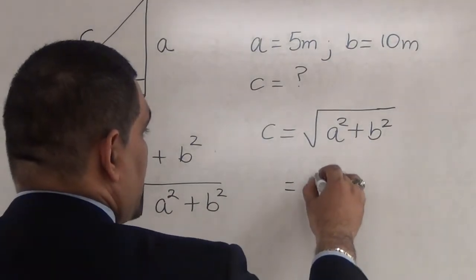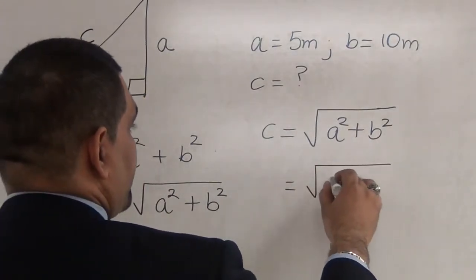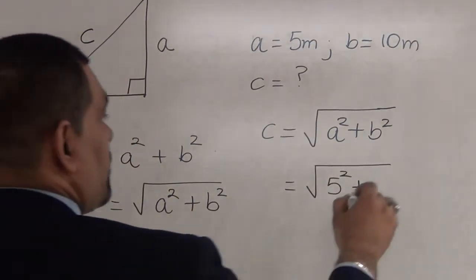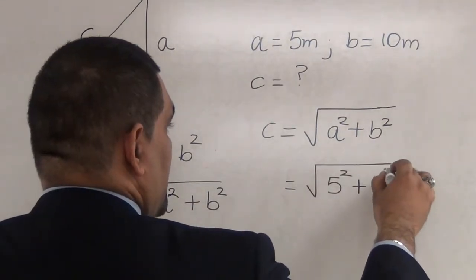So, therefore, we have the square root of A, which is 5, and that is 5 squared, plus B, which is 10 squared.